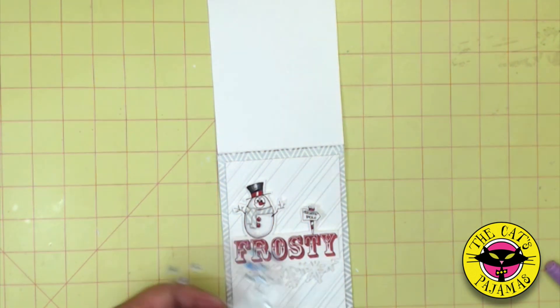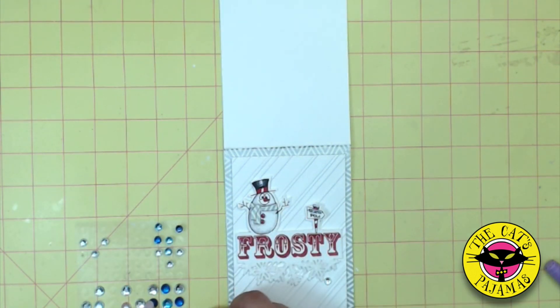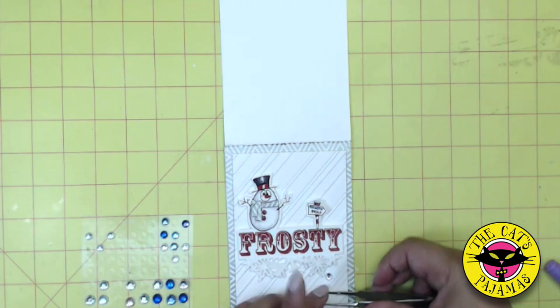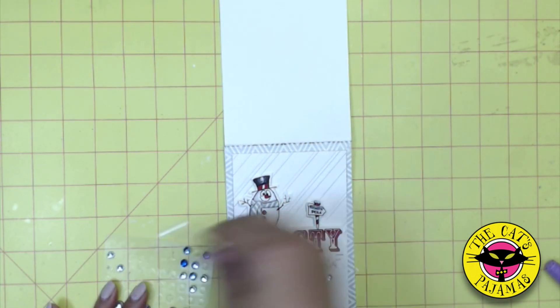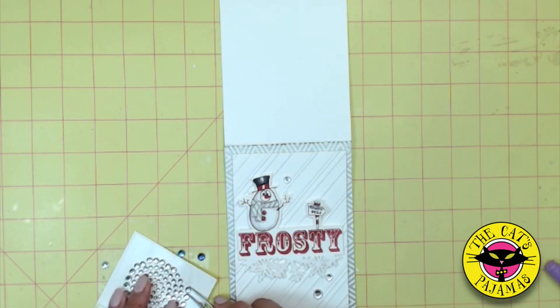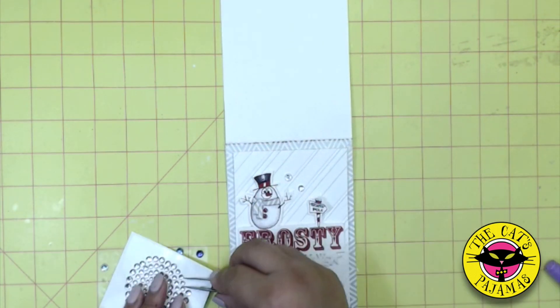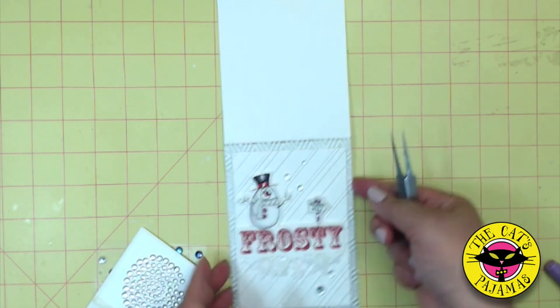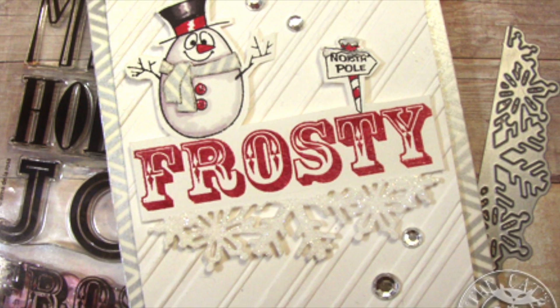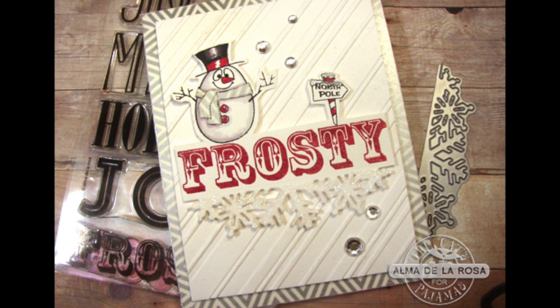Now I think I'm going to finish off with some rhinestones. Because they're handy. You could use sequins if you like. Just a couple more. I think that's good. I love how modern this looks with the big holiday word. And it was easy. I hope you give it a try. Have a great day.